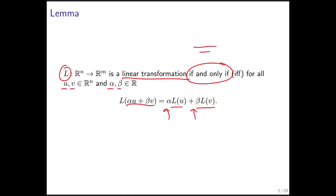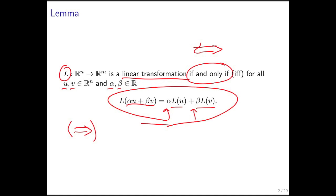If and only if is sometimes written with a special symbol. The way you often prove an if and only if is that you first show it one way — we're going to show that L being a linear transformation implies that for any vectors u and v in Rn and any scalars alpha and beta in R, this result is true. Then we assume that result holds for all u, v, alpha, and beta, and use that to prove L must be a linear transformation. That would be the part of the proof going the other way.